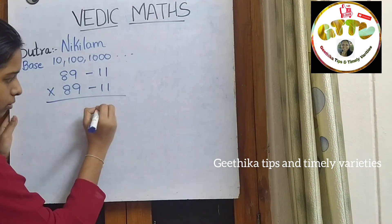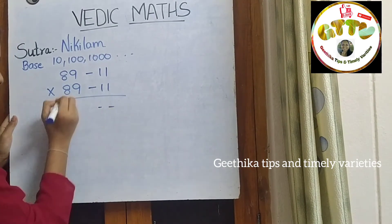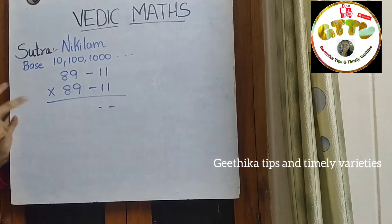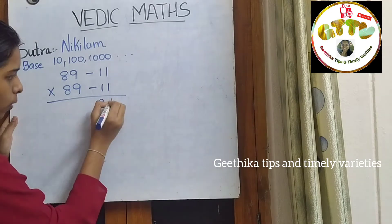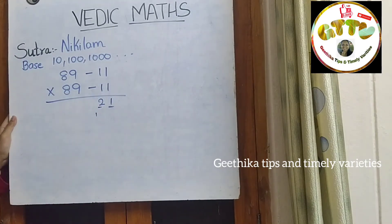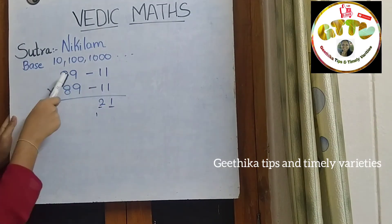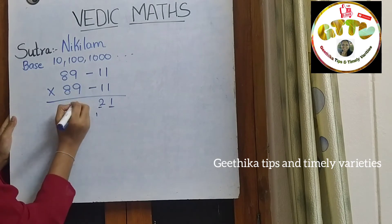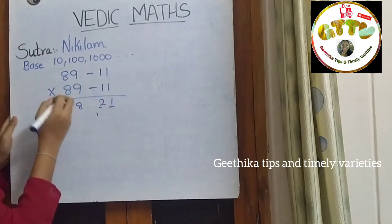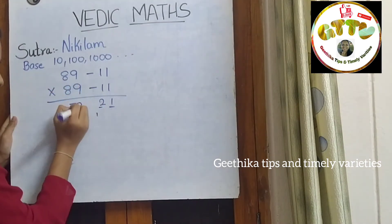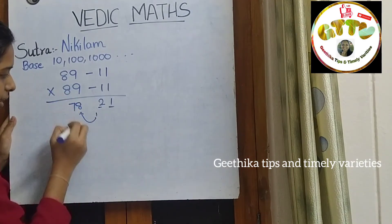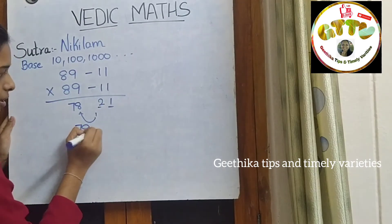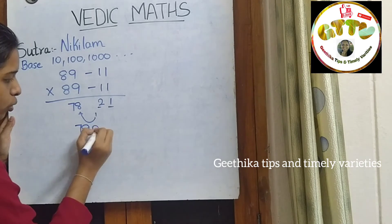Put 2 blanks here, and 11 into 11 is 121. Write 1, 2, 1 below this. And 89 minus 11: 9 minus 1 is 8, and 8 minus 1 is 7. Add this 1 to 78. So, 89 into 89 is 7,921.